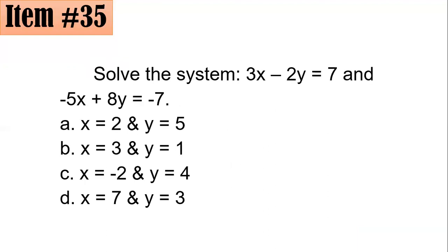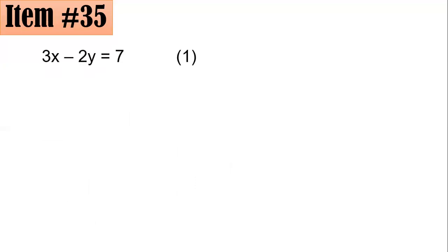Item 35. Solve the system: 3x minus 2y equals 7 and negative 5x plus 8y equals negative 7. We could actually use substitution, elimination, or Cramer's rule. For this, for the meantime, I will be using elimination. So if this is the first equation and this is the second equation, I have the intention of eliminating y.